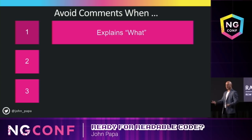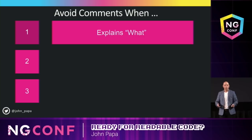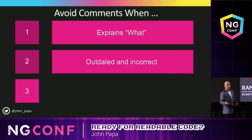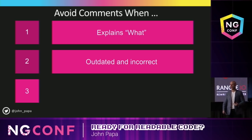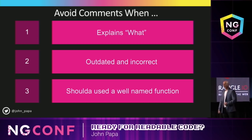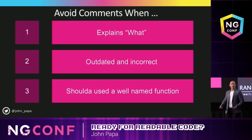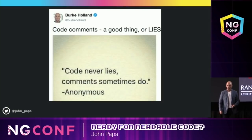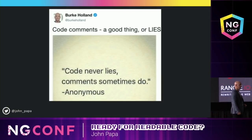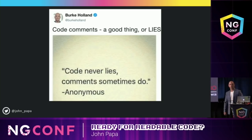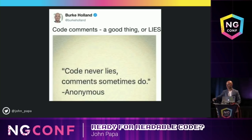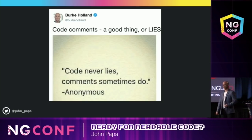At the beginning we talked about imagining the production outage. What if it just said, 'Hey, leave this code here'? You'd ask why. You go on further to explain. Outdated and incorrect comments are worse than having no comments, because they mislead you. Or you coulda used some kind of a well-named function or variable. Code never lies, but sometimes comments do.